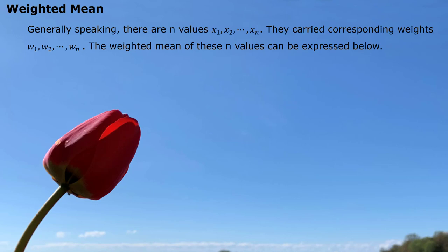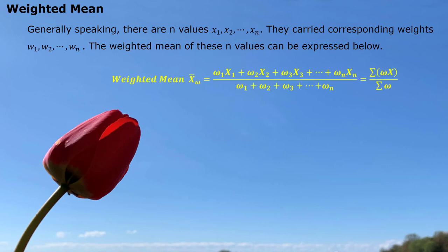Generally speaking, if we have n values x1, x2, until xn, and they carry the corresponding weights w1, w2, until wn, the weighted mean of these n values can be expressed as follows: we use each individual value multiplied by its corresponding weight, and then put all these products together and divide by the total weight.